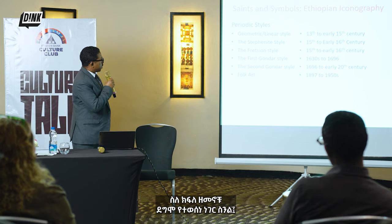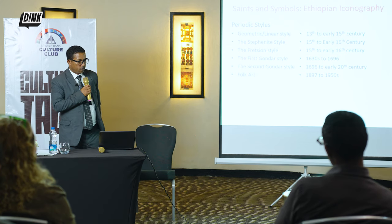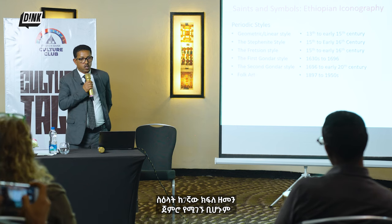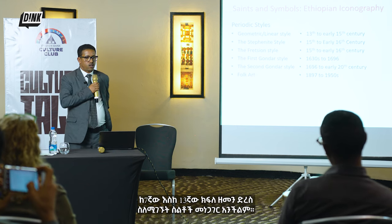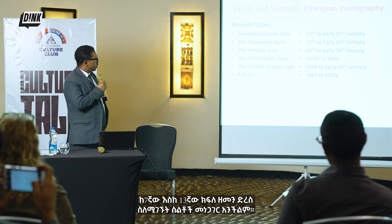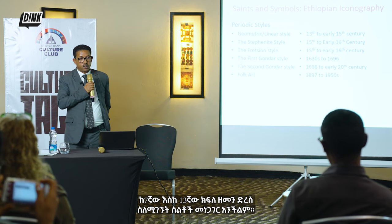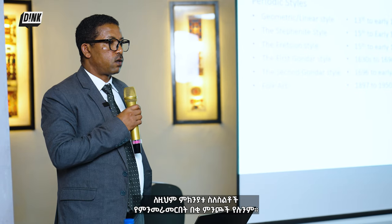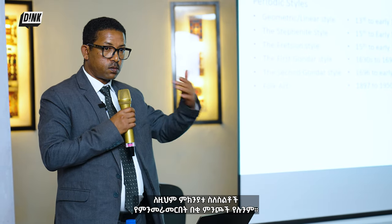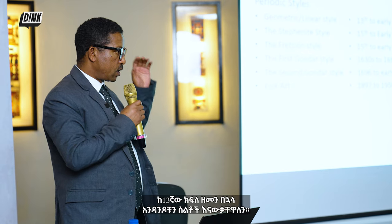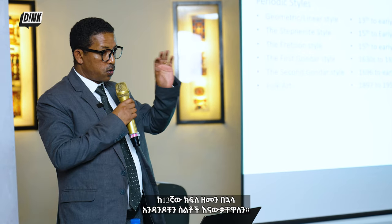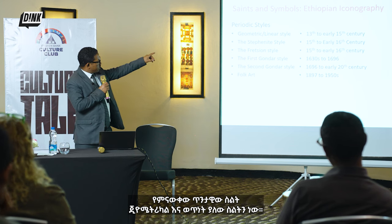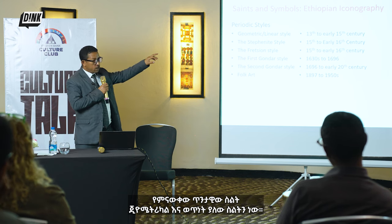To say a few words about the periodic styles: even though painting existed as early as the 7th century AD, we cannot talk about styles from the 7th to the 13th century because we don't have sufficient sources. So from the 13th century onwards we know some of the styles. The earliest style we know is the geometric or linear style.